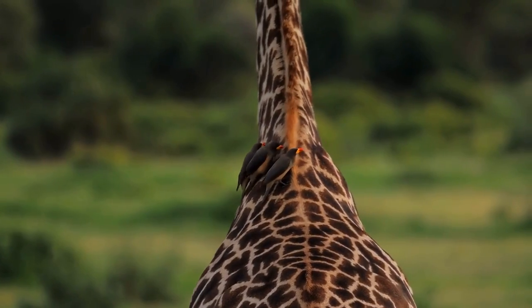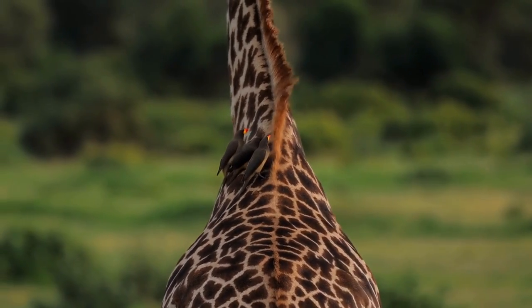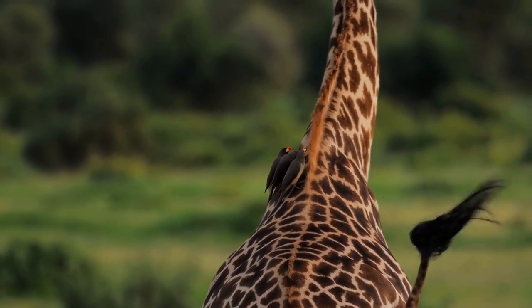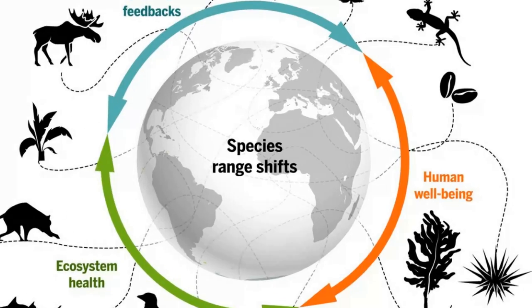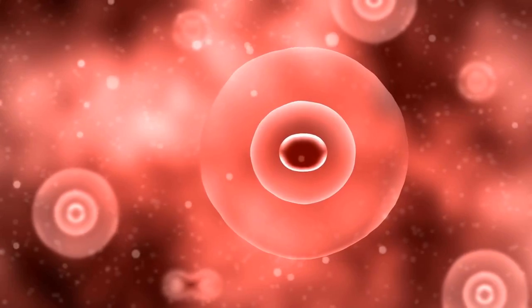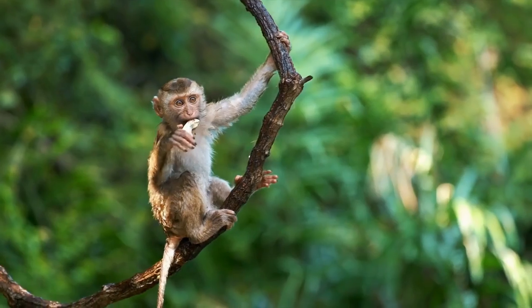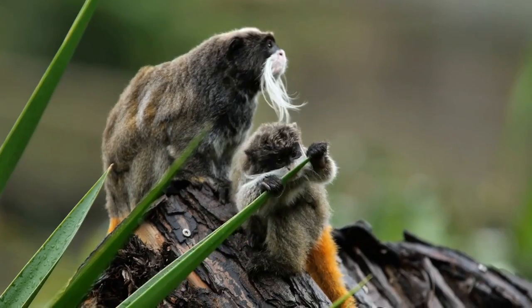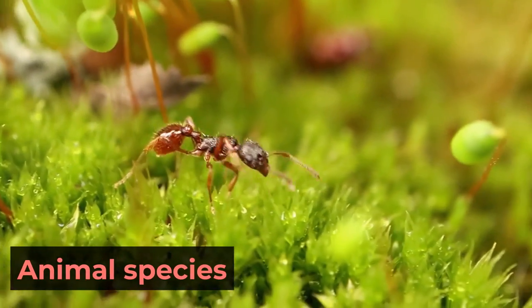Animals with similar characteristics are categorized into various classes, and animal classification comprises the following: the range, the kingdom, division, sect, rank, secondary rank, the family, sex, type, and animal species.